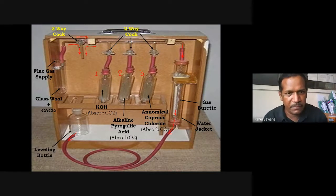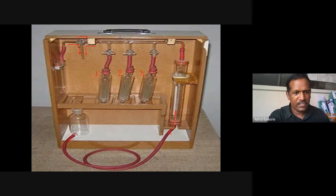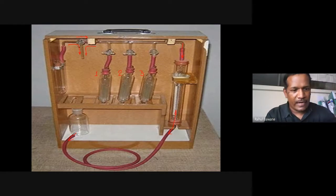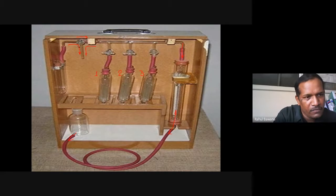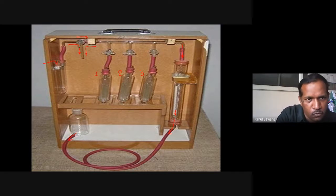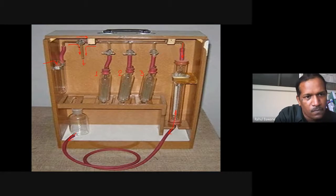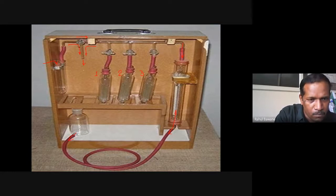During the experiment, if I raise the leveling bottle, water starts moving and enters the gas burette — the gas burette fills with water. To start the experiment, we attach the flue gas supply to the U-tube but do not allow it to pass through the whole system initially. We open the three-way cock and allow whatever air is on the right-hand side to move out.